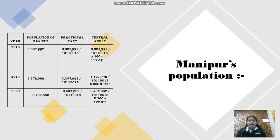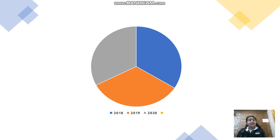Now I'll find out the central angle of Manipur's population. I'll write year, population of Manipur, fractional parts, and then central angle. When I receive the central angle, I'll get a pie chart which will look like this. In this pie chart, the blue color represents 2018's population, the orange color represents 2019 population, and the gray color represents 2020 population.